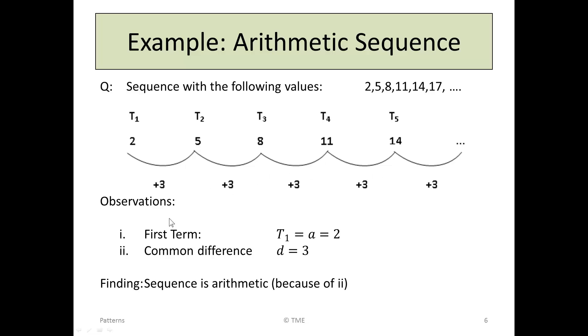In this particular sequence, the observations are that the first term, T1, which is also called A, has a value of 2. And D, the common difference, has a value of 3. Because we've identified a common difference, and it's always 3 from each one to the next, we say the sequence is arithmetic, because of this common difference.